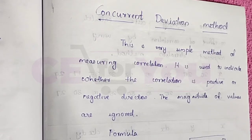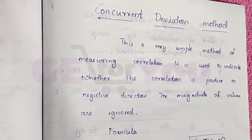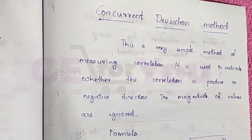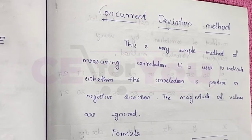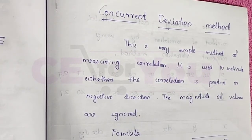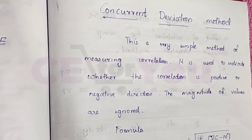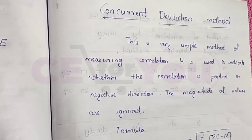In this class, we will learn the coefficients of correlations and Spearman's rank correlation coefficient. The last method is the Concurrent Deviation Method.